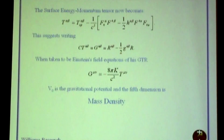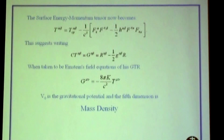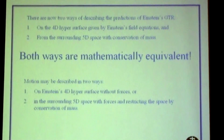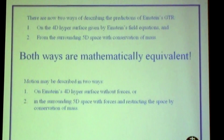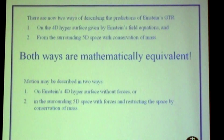When you take those equations to be Einstein's field equations, you find out the only thing that the fifth dimension can be is mass density. There are then two ways of describing phenomena that we see in Einstein's general theory of relativity: one is from the four-dimensional curved surface that Einstein gave us in 1916, and the other is from the five-dimensional space manifold of space, time, and mass that the surface is embedded into via conservation of mass.